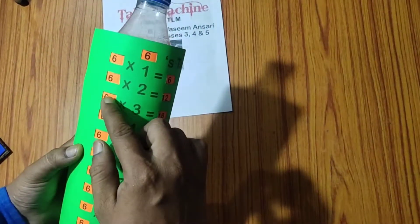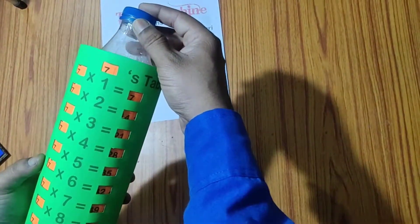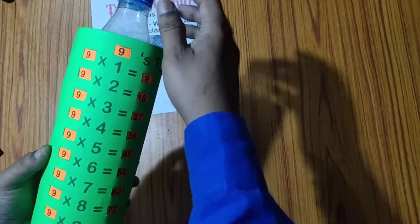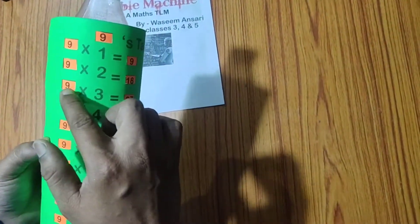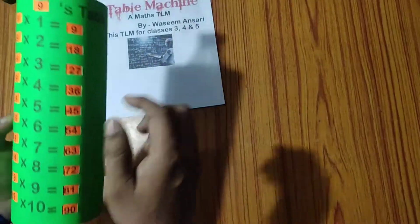6, 1 jar, 6. 6, 2 jar, 12. Till 60. Table of 7. Table of 8. Table of 9. 9, 1 jar, 9. 9, 2 jar, 18. 9, 3 jar, 27. Similarly till 90. You get it.